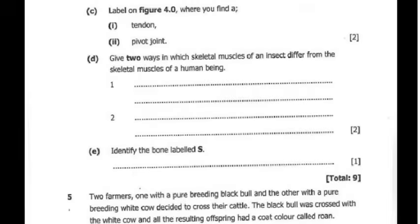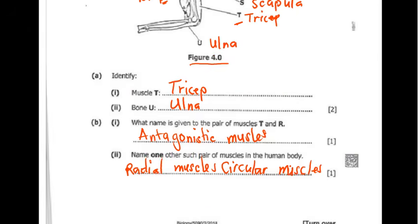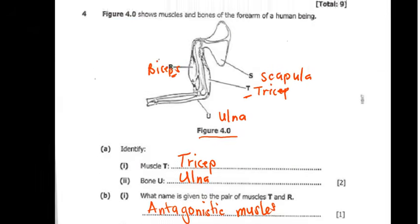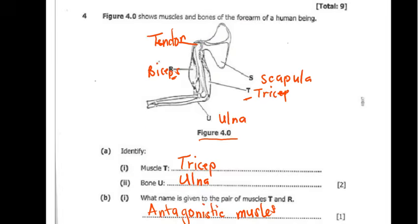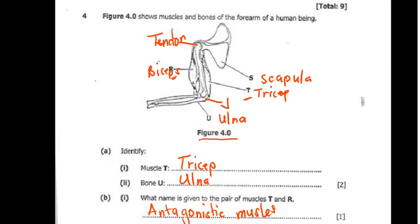Question 4C1 and C2: label on figure 4.0 where you find a tendon and a pivot joint. A tendon is found right here, and a pivot joint — a joint — is found right here on the figure.